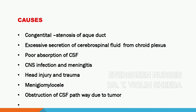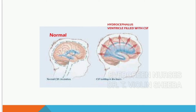In cases of CNS infection and meningitis, CSF fluid will not be absorbed properly. Head injury, trauma, meningomyelocele, and any obstruction in the CSF pathway — such as due to a tumor or malignancy — can cause obstruction. Because of this obstruction, the cerebrospinal fluid will not pass properly and will be stagnated within the system. These are the various causes of hydrocephalus.